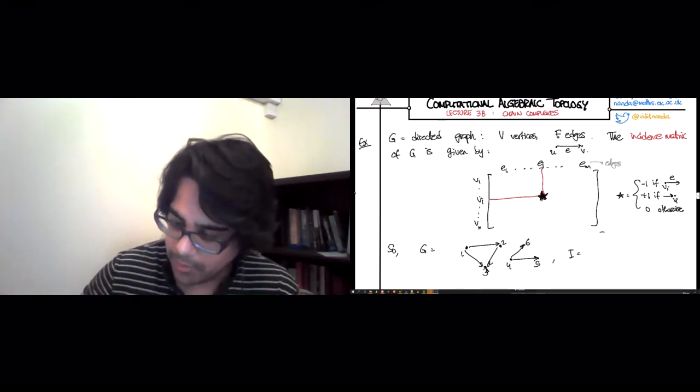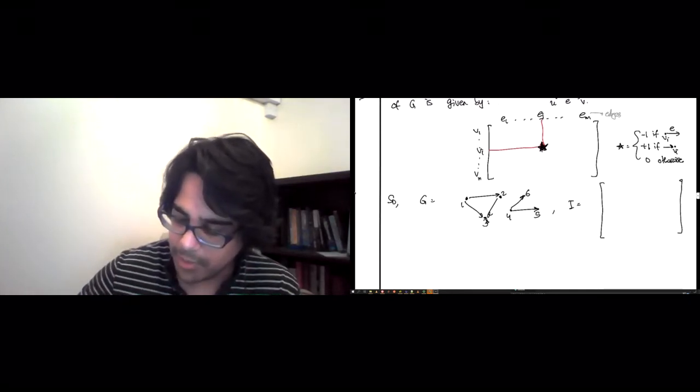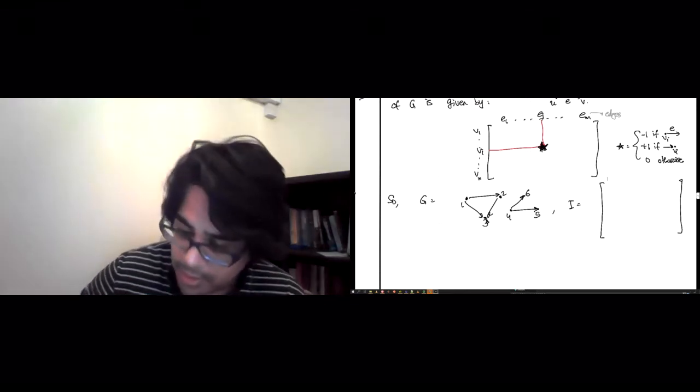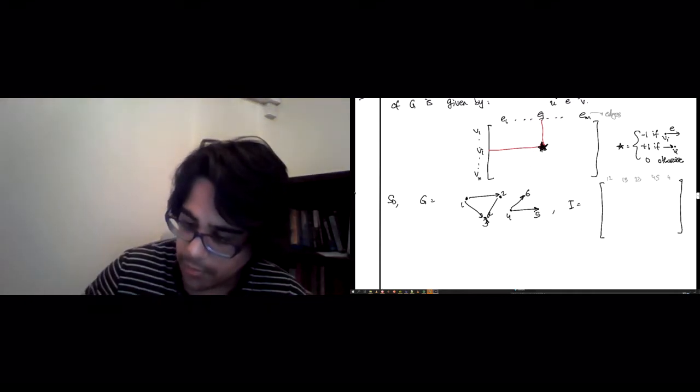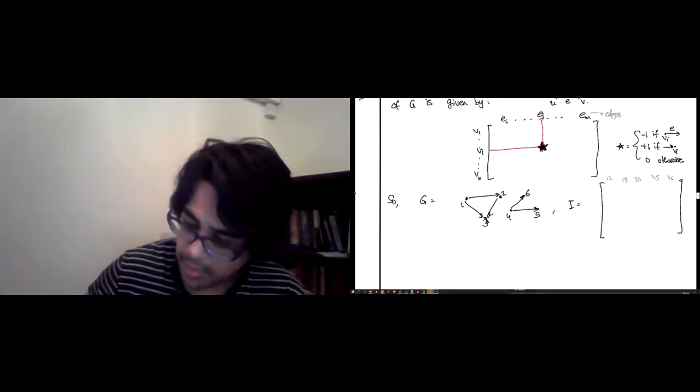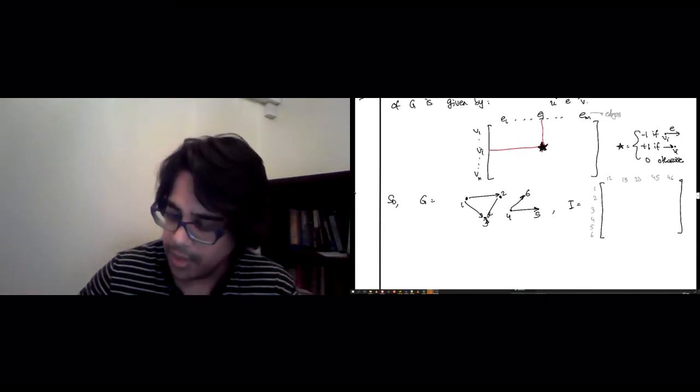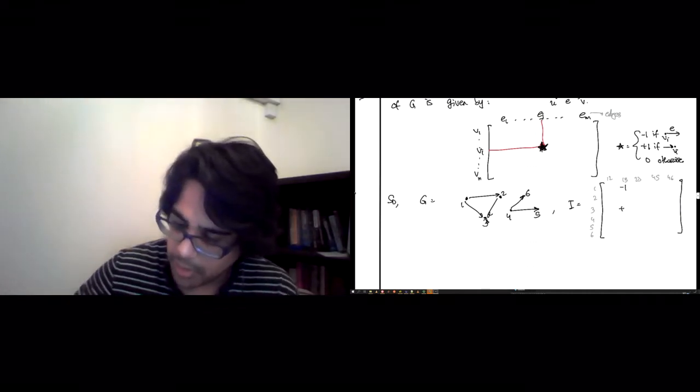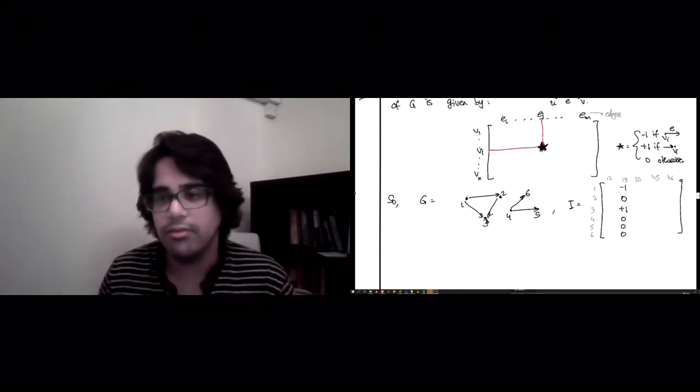Then the matrix we get for this, it's going to take a while to populate. The edges go on top. So what are the edges? There's 1,2, 1,3, 2,3, 4,5, and 4,6. And the vertices are 1, 2, 3, 4, 5, 6. So for example, in the column for 1,3, you get a minus 1 for the 1, which is a source, and a plus 1 for 3, which is the target, and everything else is 0. And then you can fill out the other columns.